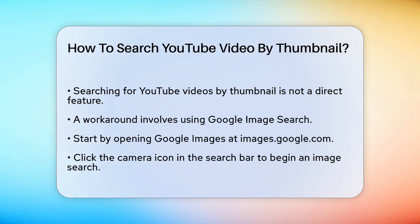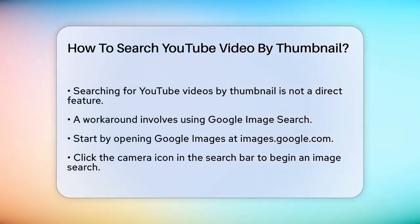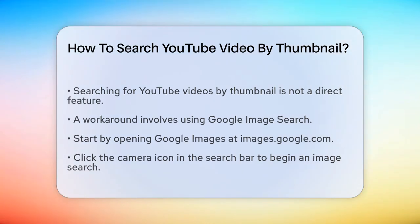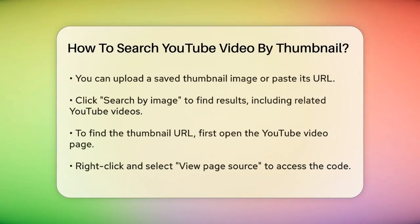Here's one effective method using Google Image Search. One of the best ways to search for a YouTube video using its thumbnail is by utilizing Google's image search feature. Here's how you can do it. One: open Google Images — go to images.google.com in your web browser.